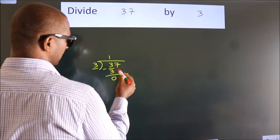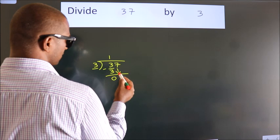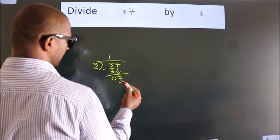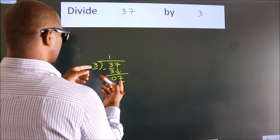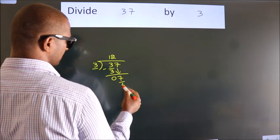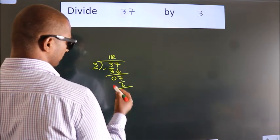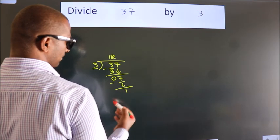After this, bring down the beside number, so 7 down, so 7. A number close to 7 in 3 table is 3 2s, 6. Now, we subtract, we get 1.